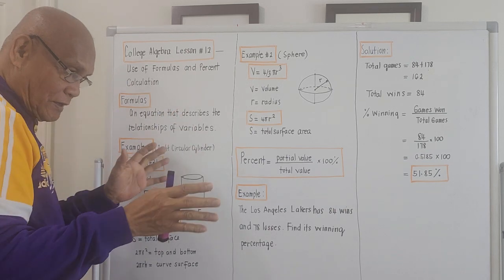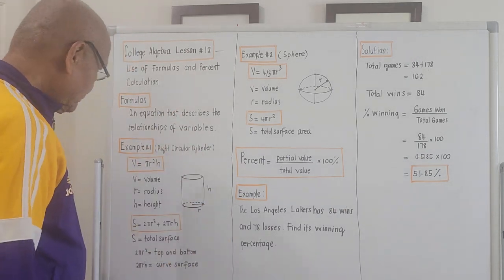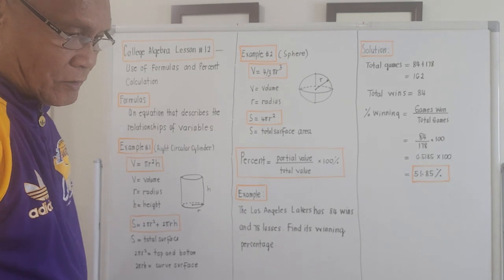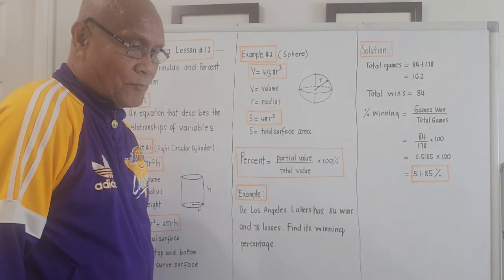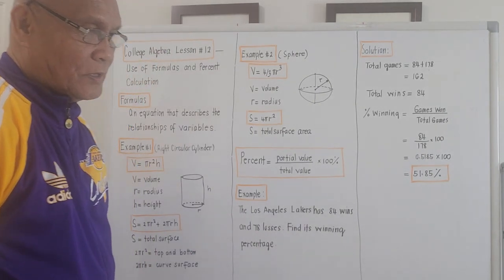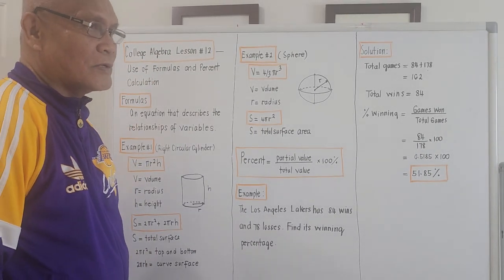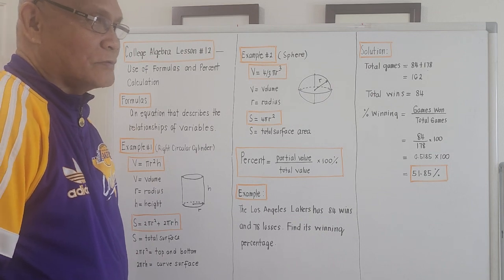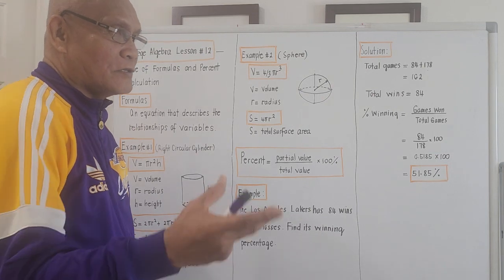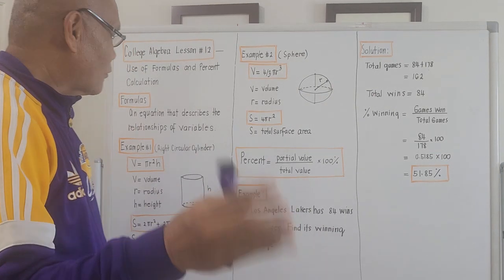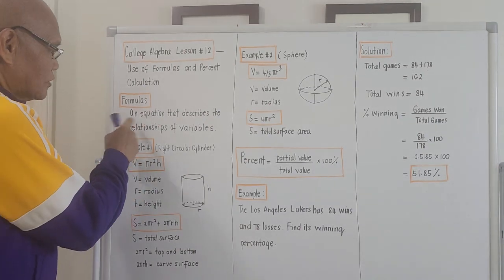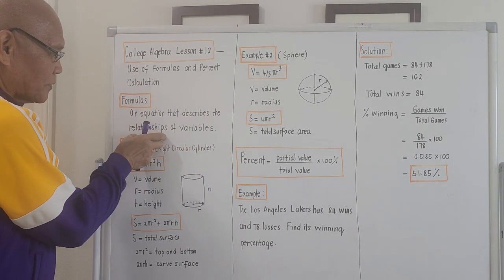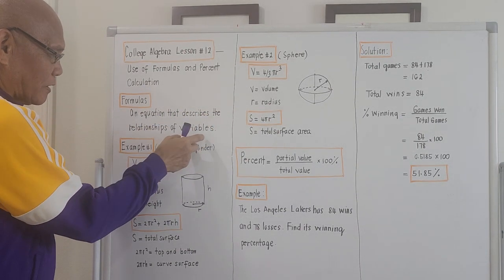What is a formula? A formula is actually an equation. The definition of a formula is that it is an equation that describes the relationships of variables.